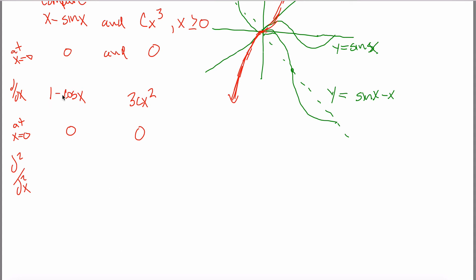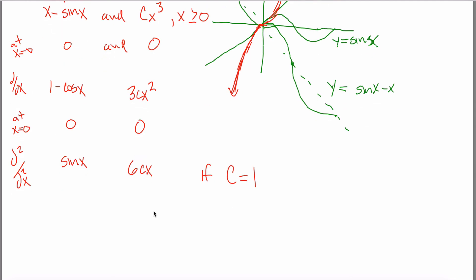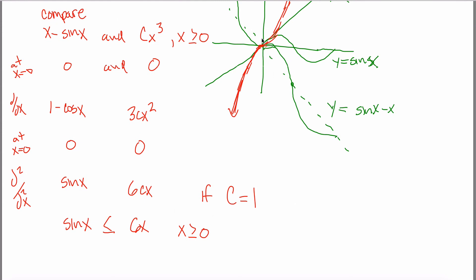Now finally we can compare. With c = 1, we have 6x on one side and sin(x) on the other. Note that 6x is always greater than or equal to sin(x) when x ≥ 0, because sin(x) starts going up at a speed of at most one while 6x goes up at a speed of six — it thoroughly beats sin(x).